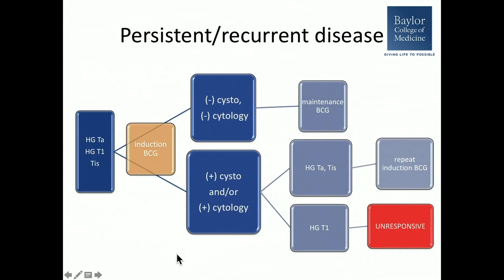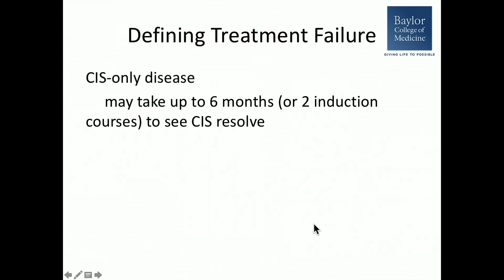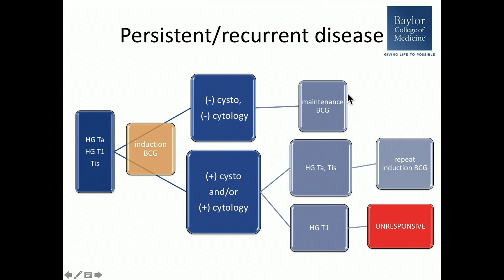Here is a schema: patients with high-grade disease receive induction BCG. If cystoscopy and cytology are negative, they continue on maintenance BCG. If cystoscopy or cytology is positive for high-grade TA or TIS, they may continue BCG or receive another induction course. If they have persistent or new high-grade T1 at the very first evaluation, that is already BCG unresponsive disease. After repeat induction or maintenance, finding additional high-grade disease also qualifies as BCG unresponsive.